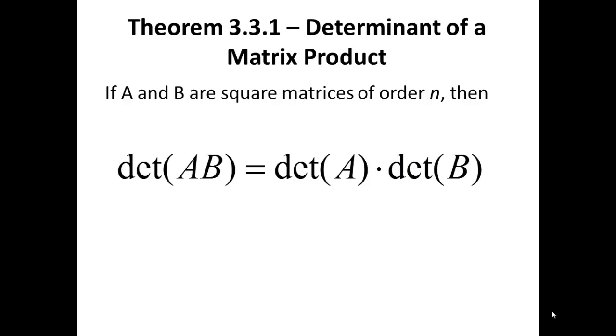First, Theorem 3.3.1, Determinant of a Matrix Product. If A and B are square matrices of order N, then the determinant of the product equals the product of the determinants, i.e. the determinant of A times B equals the determinant of A times the determinant of B.